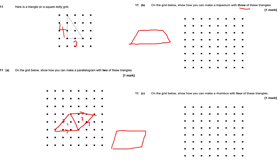Let's change colour to make it a bit easier. So like that, then we're going to go four across, and go down like that, and then go across like that. We're going to have one, two, and three triangles for the trapezium.